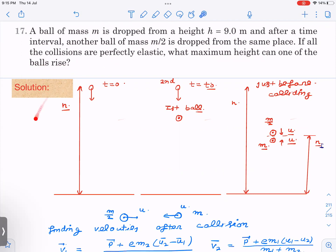So this is a diagram. At t=0, first ball is dropped from certain height. This is at t=t₀. Let us say, after t₀ time, second ball is